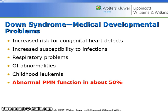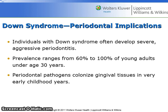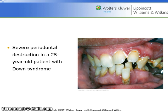The medical and developmental problems associated with Down syndrome include increased risk for congenital heart defects, increased susceptibility to infections, respiratory problems, GI abnormalities, childhood leukemia, and 50% have abnormal PMN function. Impaired PMN chemotaxis and phagocytosis most likely explain the high prevalence and severity of periodontitis associated with Down syndrome. Individuals with Down syndrome often develop severe, aggressive periodontitis, with prevalence ranging from 60 to 100% of young adults under age 30. Periodontal pathogens colonize gingival tissues in very early childhood. Here is an image of severe periodontal destruction in a 25-year-old patient with Down syndrome.